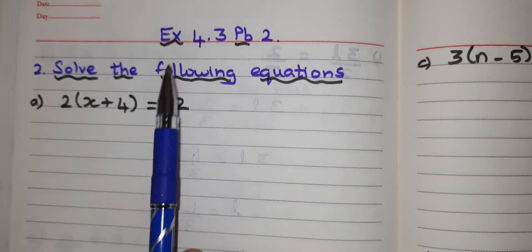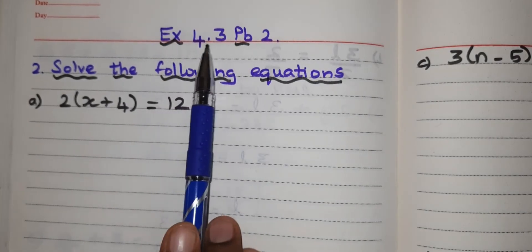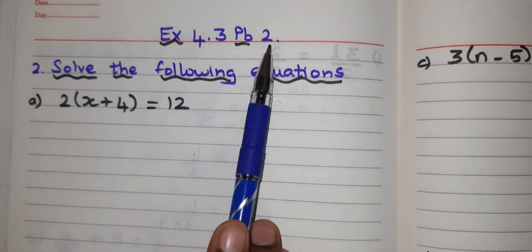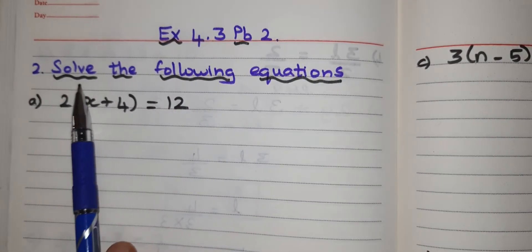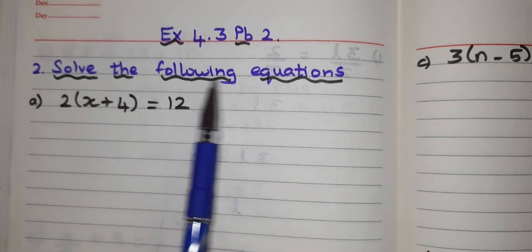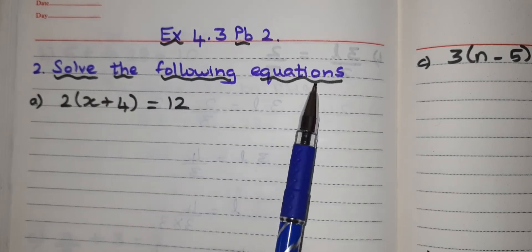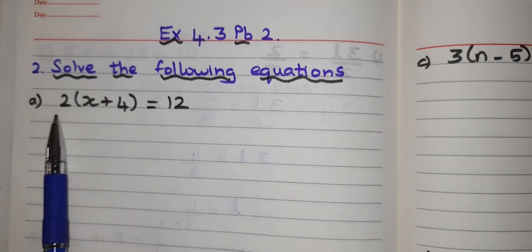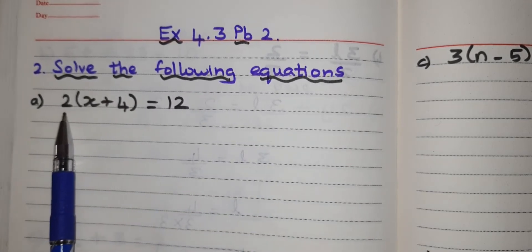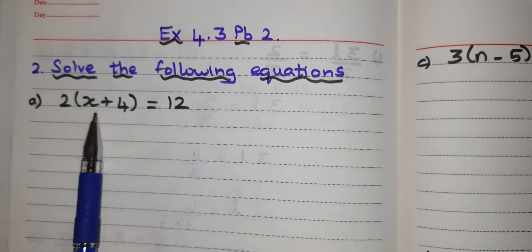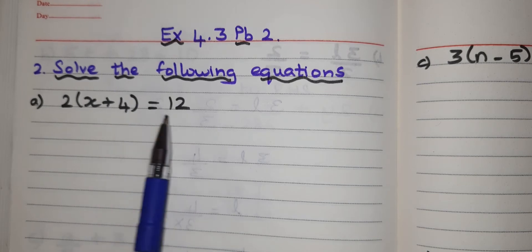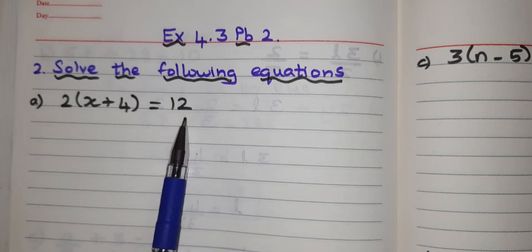Hello students. This is exercise 4.3, problem 2 — solve the following equation. First problem: 2 into (x plus 4) equal to 12.